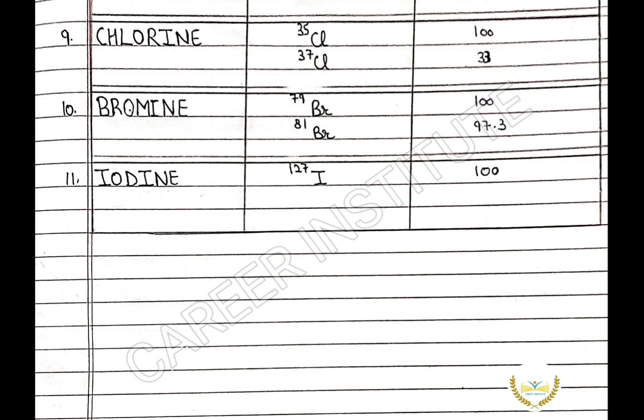The next element is chlorine. Chlorine-35 has the relative abundance of 100%. Chlorine-37 has the relative abundance of 33%.